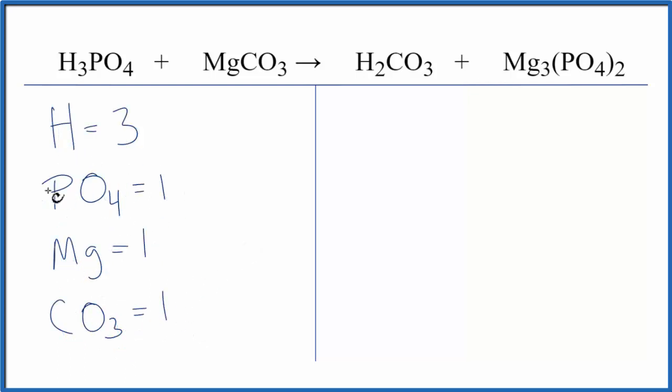By considering these polyatomic ions as one item, and they really act like that in the chemical equation here, they stay together. That makes it a lot easier, we're not counting all these oxygens separately. So on the product side of the equation,